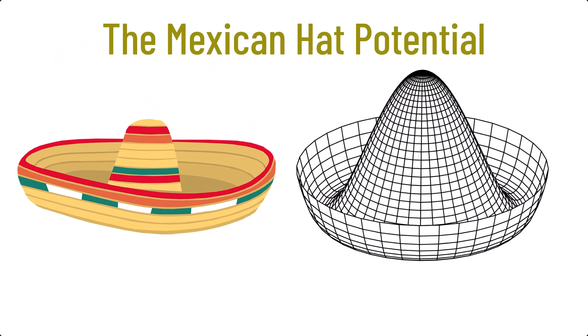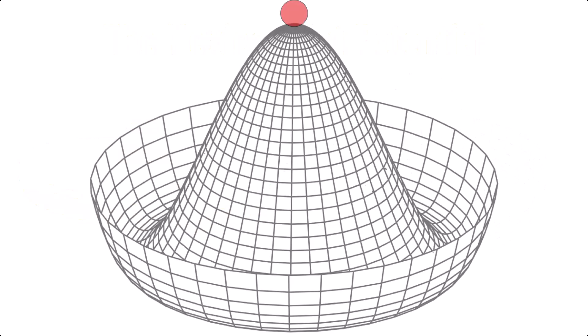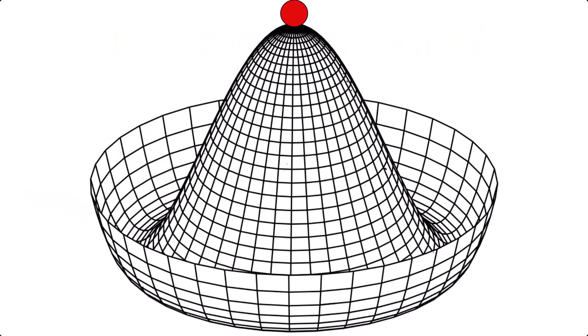But what's so interesting about the Mexican hat potential? Well, imagine again our ball, which represents the state of the system. In the Mexican hat potential, it will very quickly fall down the slope and reach the bottom of the valley. This ball can then oscillate and be excited in two modes, and I'll show them both here.